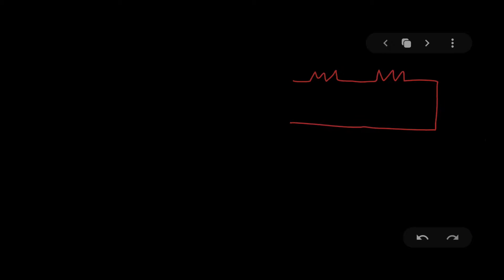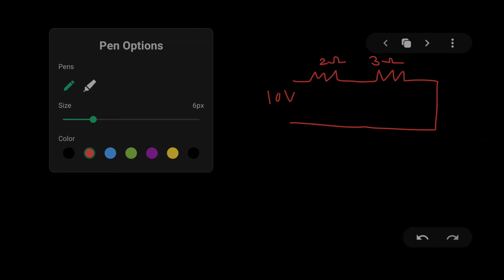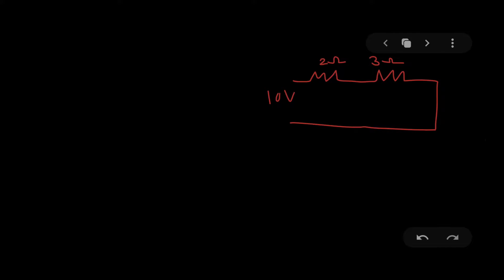Let's say I have a circuit where two resistors are connected in series — a series circuit where 2Ω and 3Ω resistors are connected across a 10 volt source. I want to find out the power across the 2Ω resistor using I²R. First, I calculate I: it will be 10 divided by the total resistance 2+3=5, which gives me 2 amps.